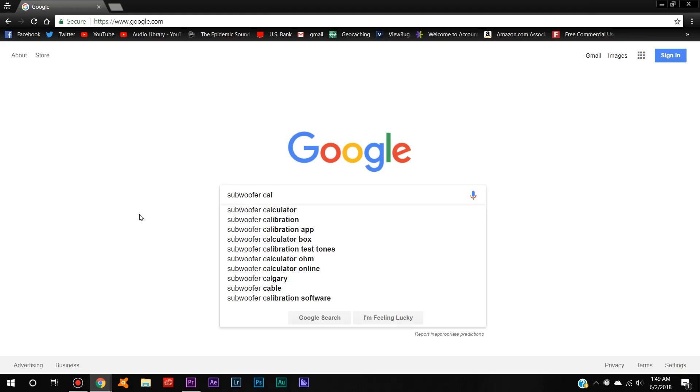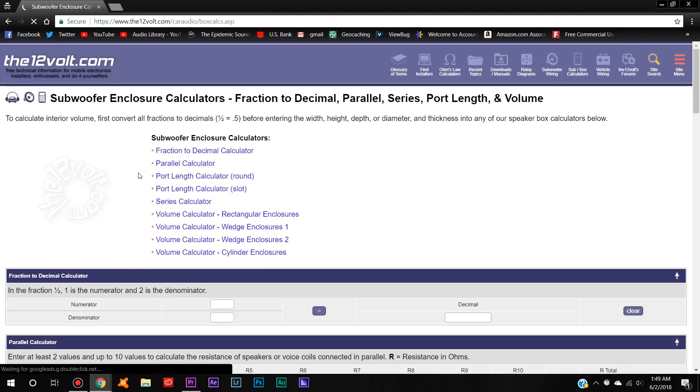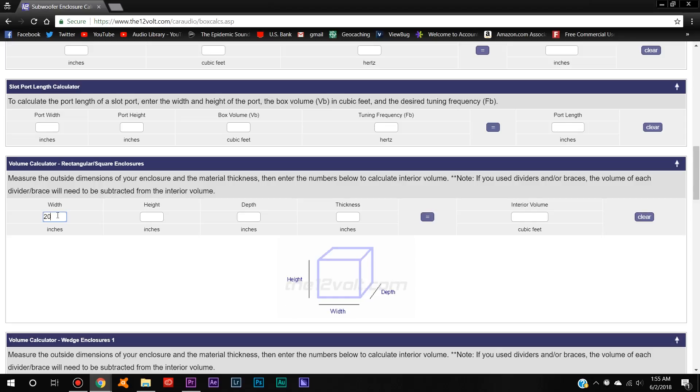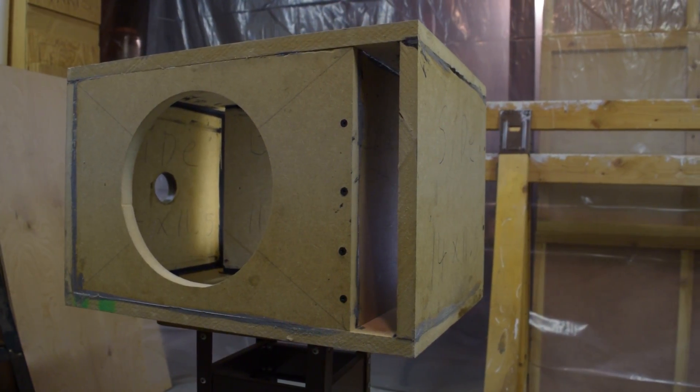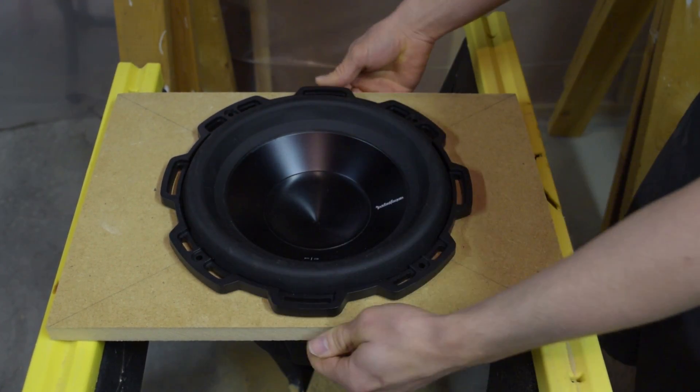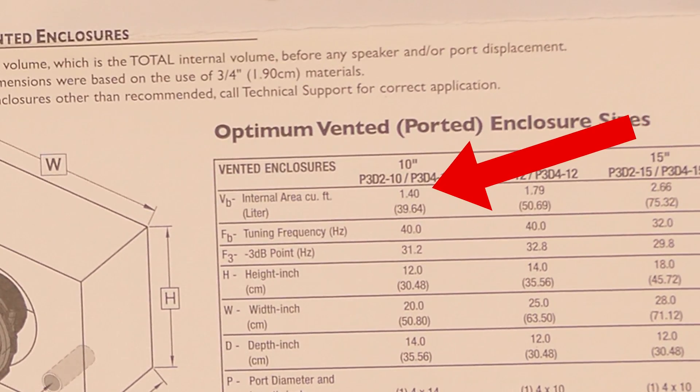I will be using some free subwoofer calculators that you can find on the12volt.com. I will leave a link in the description. Under the volume calculator for rectangular enclosures, I will put 20 for the width, 14 for the depth, and for the height, I'm going to add an inch, so I will enter 13. This is because the walls for the slot port will take up a little extra space compared to the round port, and will give the diameter of the sub a little bit more room to be bolted on. I'll put 0.75 inch thickness for the material, and this will give us about 1.54 cubic feet compared to the 1.4 that they recommended.